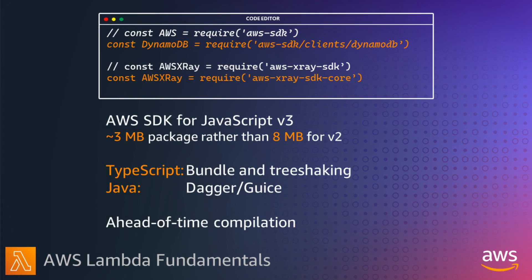Try to minimize your deployment package size and reduce the number of dependencies. This can improve startup performance and reduce cost. Instead of loading the whole AWS SDK, if you just need to connect to DynamoDB, include that specific package instead of everything, and use modular SDKs like the AWS SDK for JavaScript version 3 rather than version 2. Some languages provide additional options — with TypeScript you can bundle and tree-shake your dependencies, and with Java you can use simpler dependency injection frameworks such as Dagger or Guice over more complex ones such as Spring Framework. Some languages also support ahead-of-time compilation.